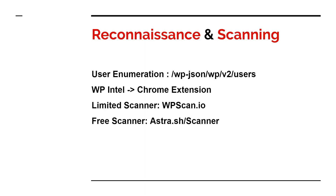First is user enumeration. This is one of the most basic vulnerabilities found in WordPress even today. If you have WordPress installed on your site, you need to go and check this particular URL — append it at the end of the site and see if you get a JSON response. You need to enter /wp-json/wp/v2/users and check if your site gives a JSON response or not.